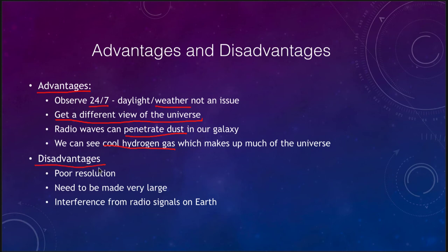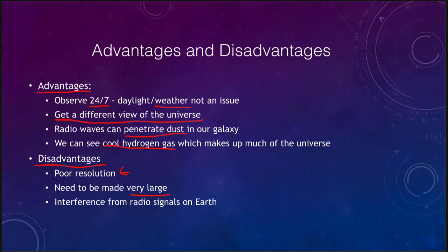Some disadvantages of radio telescopes: one is poor resolution. The resolving power of a telescope depends on the size of the telescope and also on the wavelength — if you're looking at a very long wavelength, the resolution gets worse. Radio wavelengths can be things in the centimeter range, meaning their resolution is many times worse than those of optical telescopes. Therefore, we need to make very large telescopes for radio astronomy — a small radio telescope might be in the 20 to 30 meter range, comparable to some of the very largest optical telescopes being planned. We can also get interference from radio signals being transmitted on Earth.